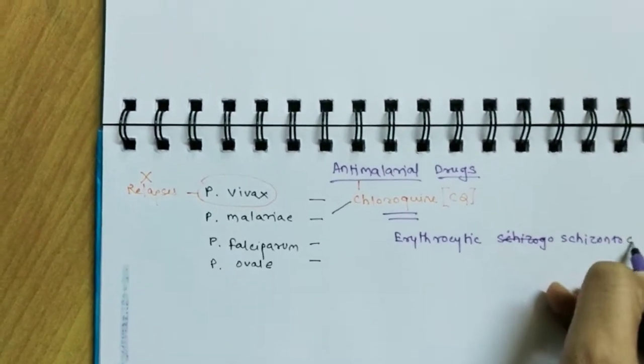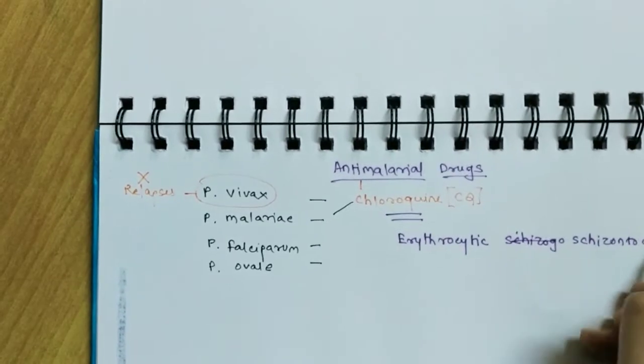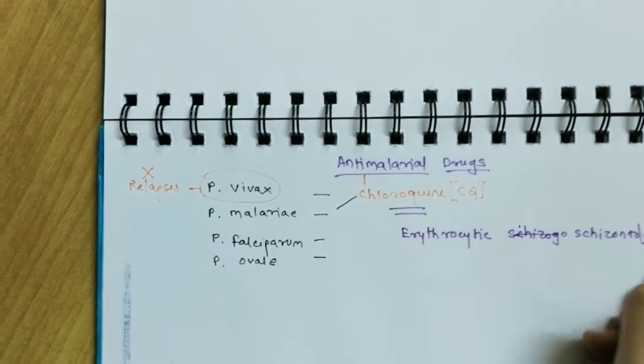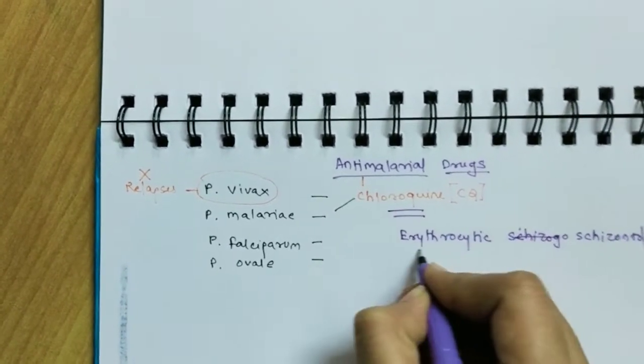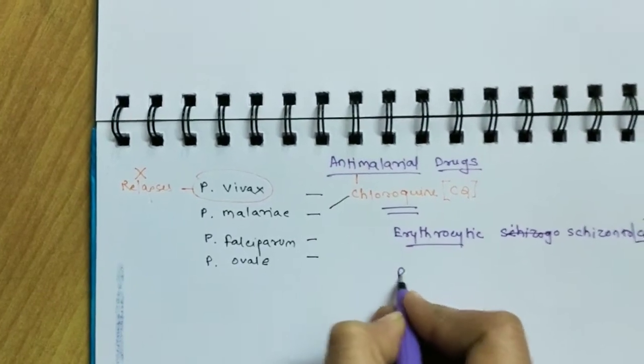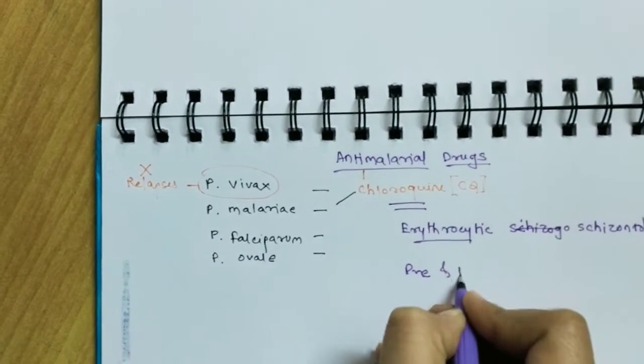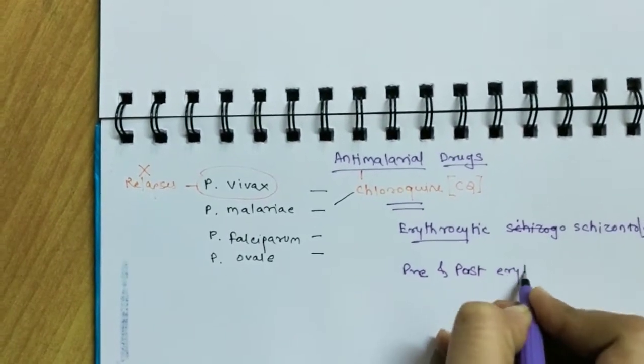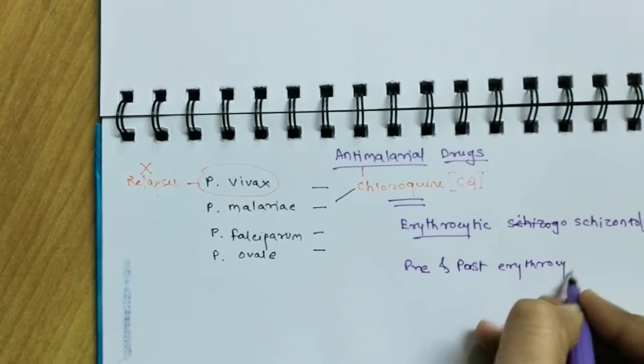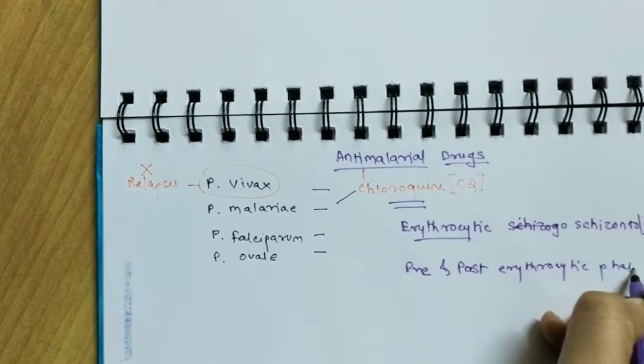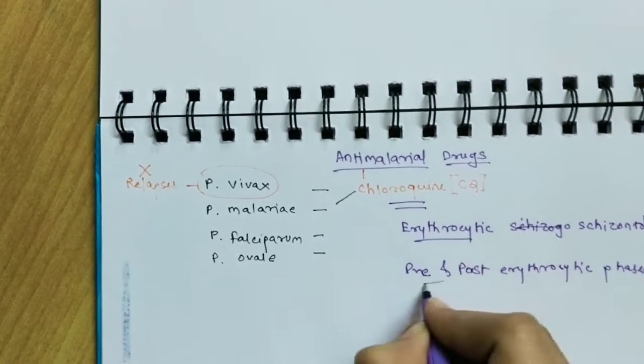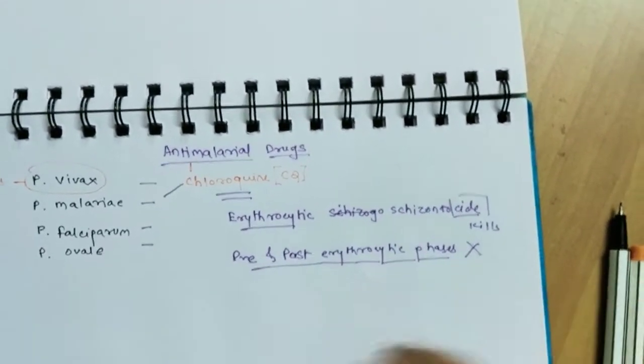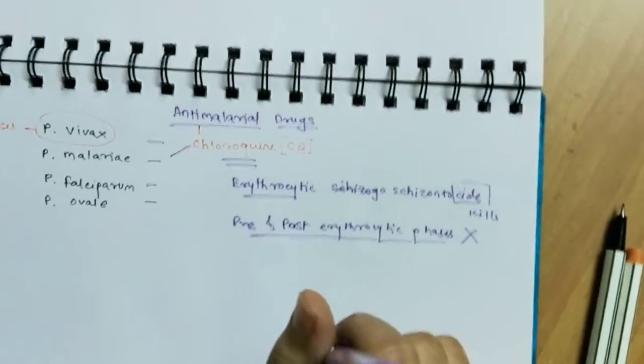So the phases of malaria like the pre-erythrocytic, post-erythrocytic, and erythrocytic phases - chloroquine is active against only the erythrocytic phase because it's killing the plasmodium which is in the erythrocyte. So it is ineffective in the pre and post erythrocytic phases. So this is the point to be noted here.